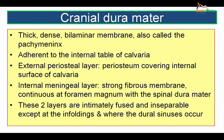The cranial dura mater is a thick, dense, bilaminar membrane also called the pachymeninges. It is adherent to the inner table of the calvaria and has two layers: an external periosteal layer forming the periosteum of the internal surface of the calvarium, and an internal meningeal layer — a strong fibrous membrane continuous around the foramen magnum with the spinal duramata. These two layers are intimately fused and inseparable except at places where the meningeal layer goes deeper in folds, giving rise to the dural folds within which the dural sinuses are placed.